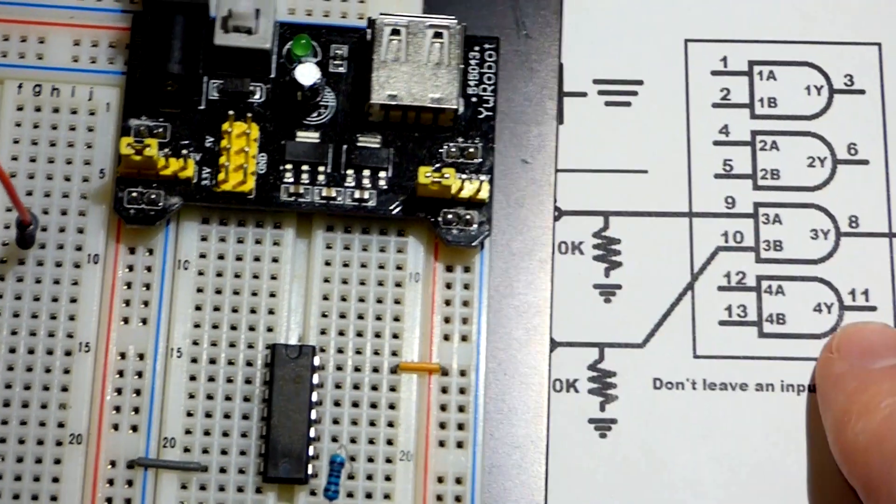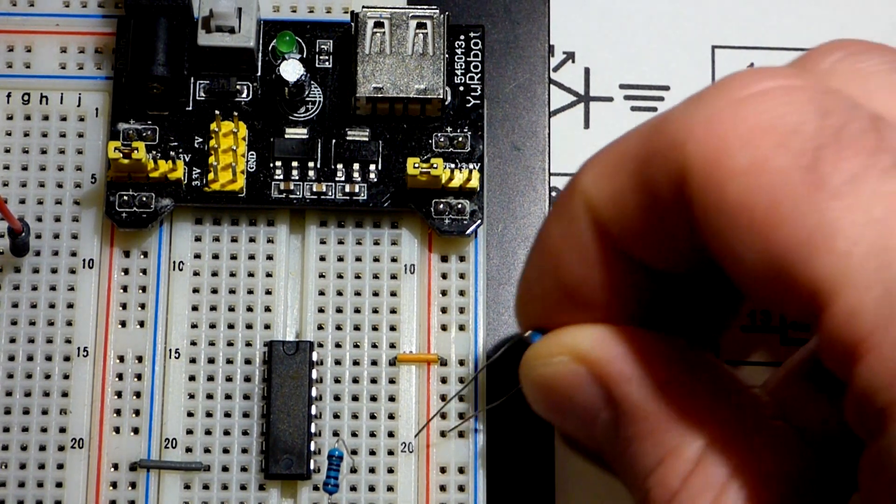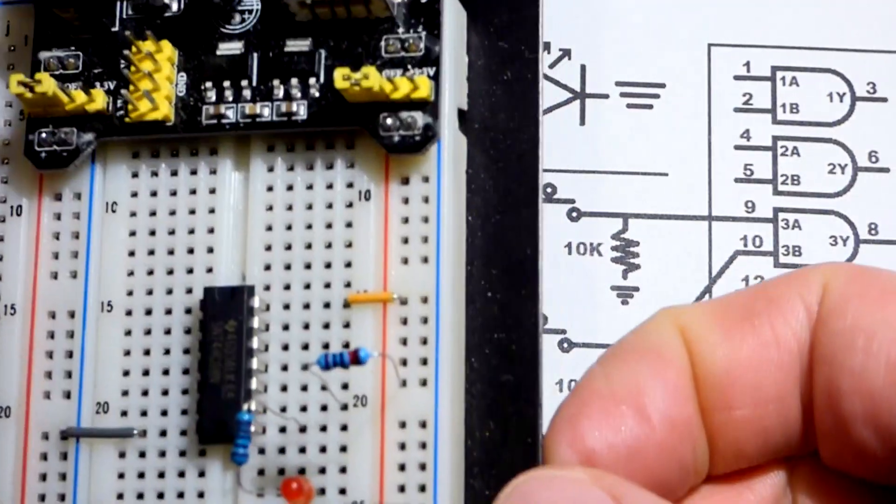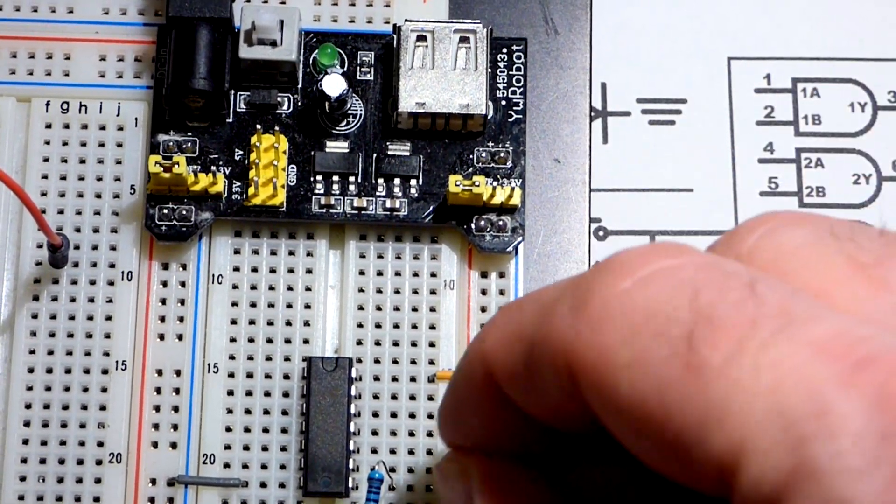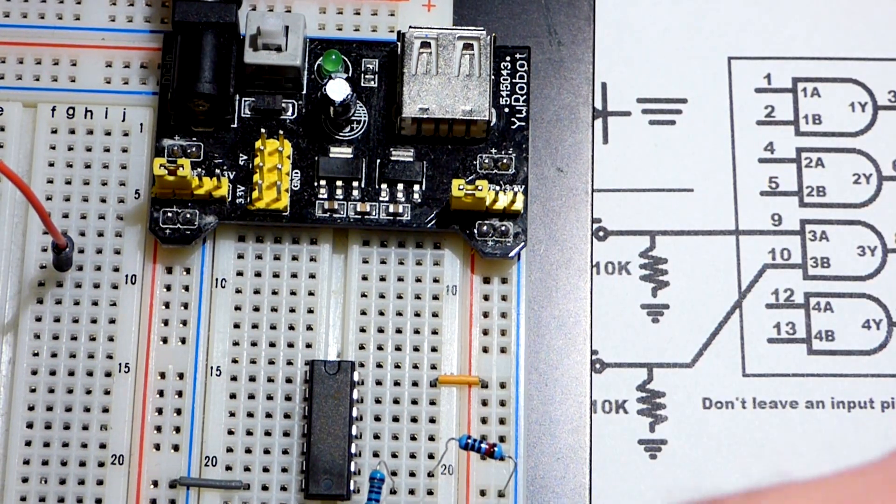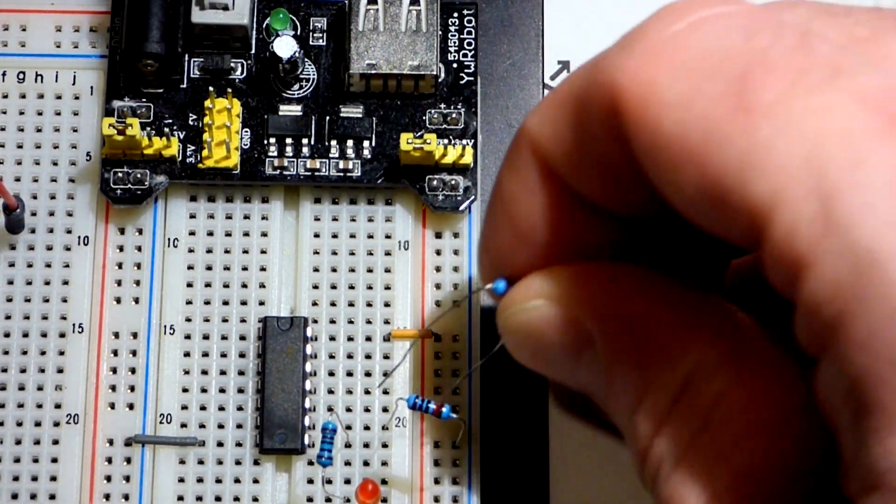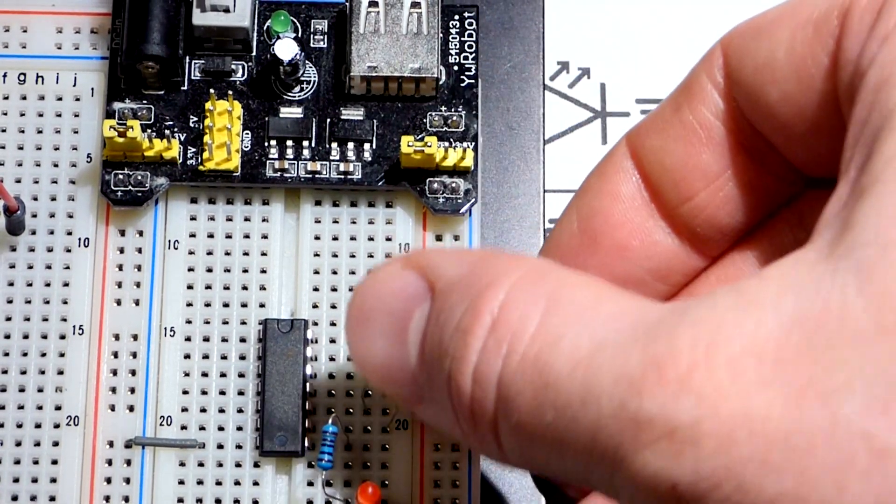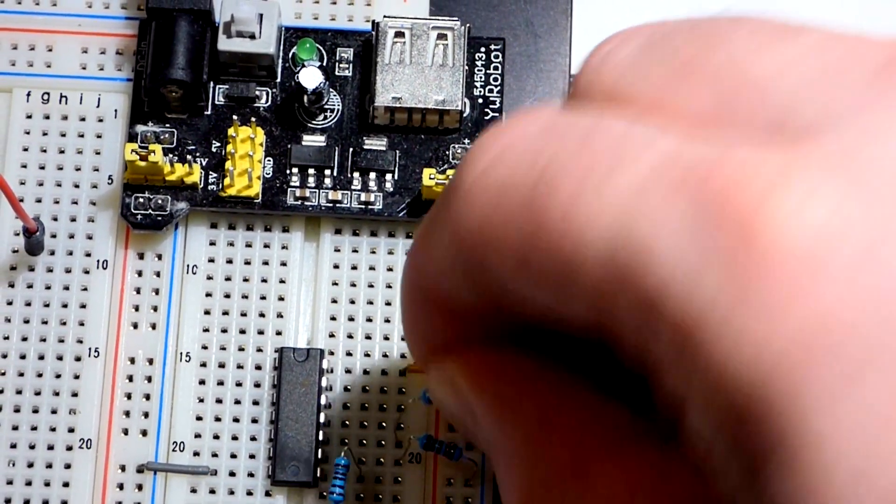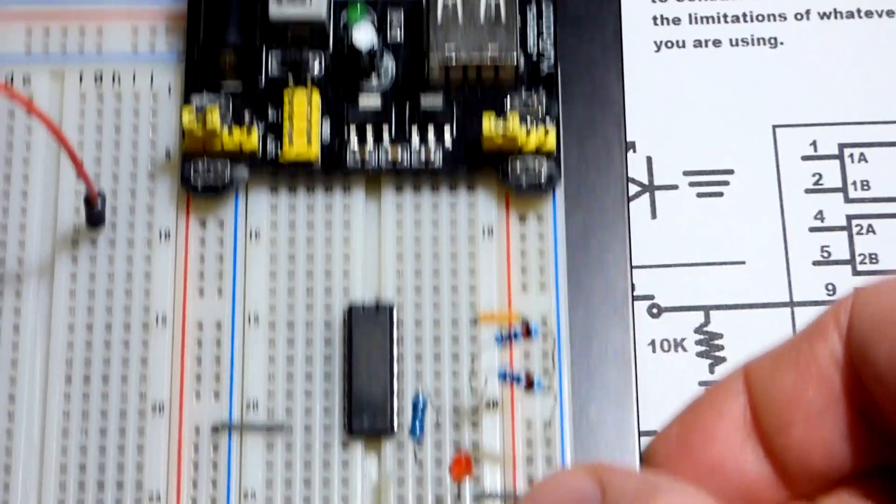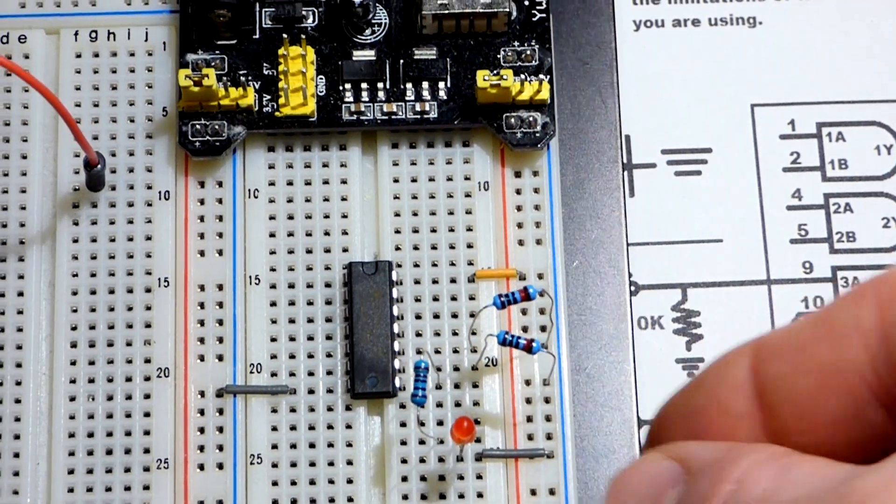We are going to take 10 kilohm resistors. Exact value not terribly important. And connect them to the two input pins. Connect them to ground. We got that one to our ground, and then to pin 10. We will also put to the negative rail. When we turn the power on, the output should be off. There we go. That's how we want it set up in this particular case.